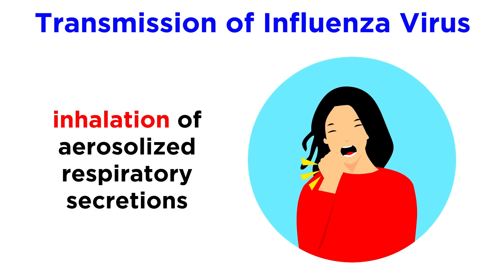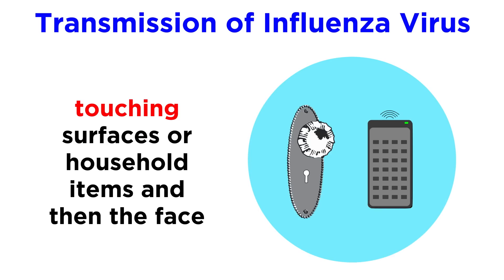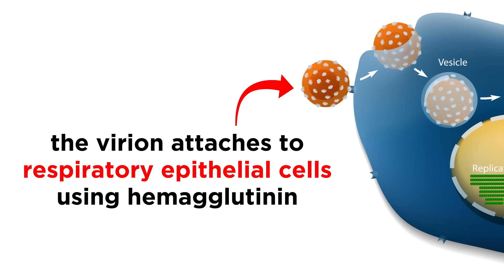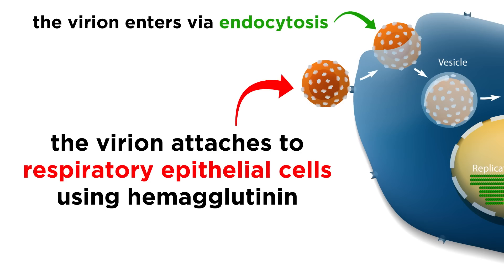Influenza typically enters a host by inhaling aerosolized respiratory secretions — basically little sneeze or cough droplets from a person who has the flu. However, you can also pick up the flu virus from commonly touched surfaces such as doorknobs or household items. In this case, the person touches something with the virus on it and then accidentally touches their face, transferring the virus into the mucous membranes via the nose or eyes. The virus then attaches, using its hemagglutinin spikes, to respiratory epithelial cells coated in cilia, and uses the process of endocytosis to enter the cell.